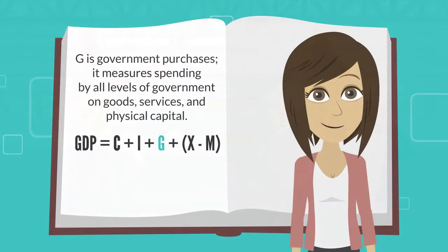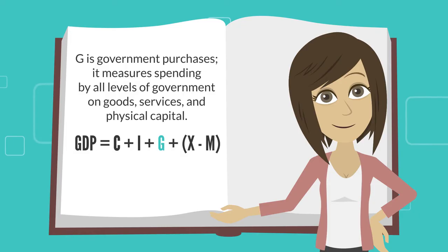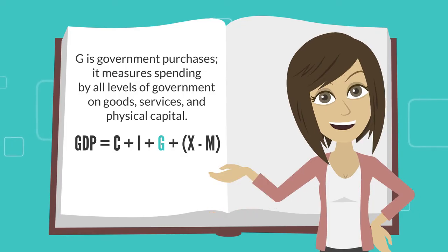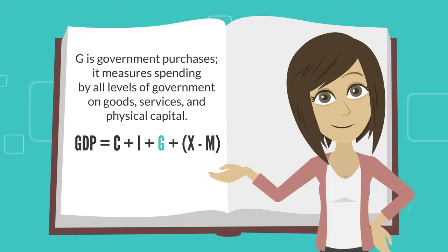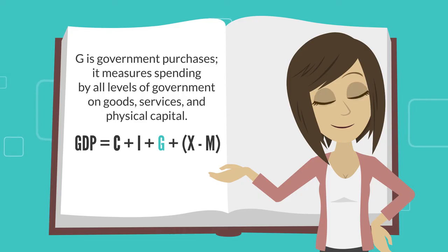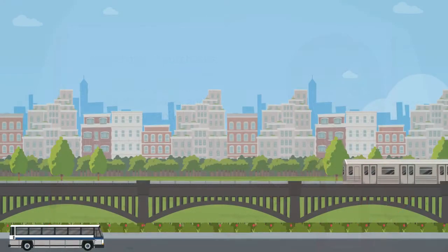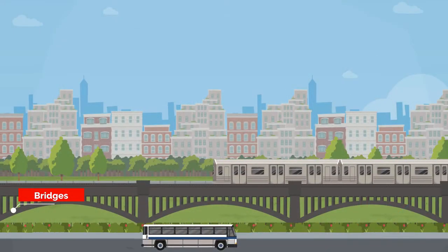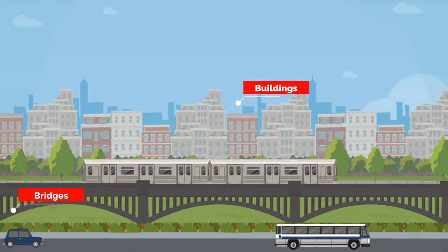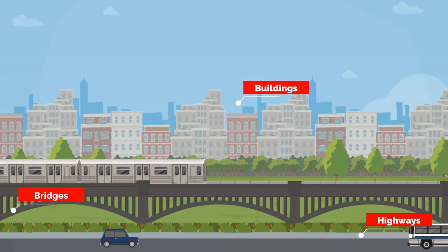G is government purchases. It measures spending by all levels of government on goods, services, and physical capital, including things like bridges, buildings, and highways.